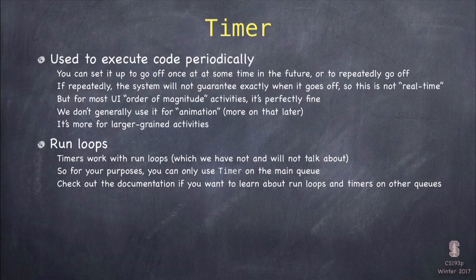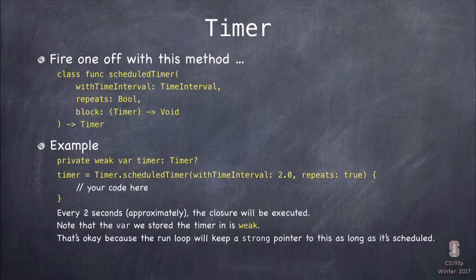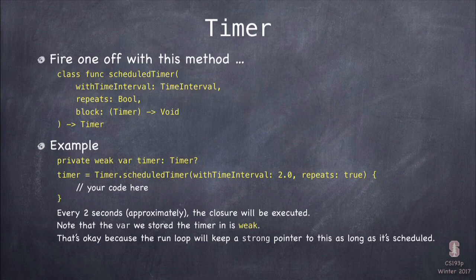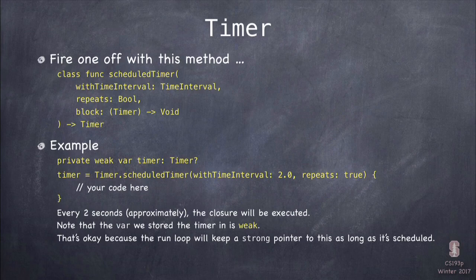For your purposes in this course as a starting iOS developer, you can assume that timers are a main queue thing. You can create timers by instantiating them, but then you have to put them on a run loop. So there's really this one class method you're going to use in Timer. It takes a block of code, a closure, and it takes when you want to execute it in the future, and whether you want to keep repeating. It's a very simple and powerful API.